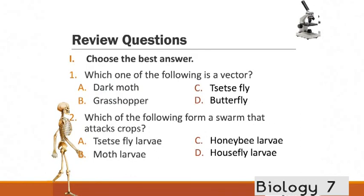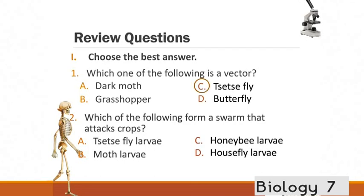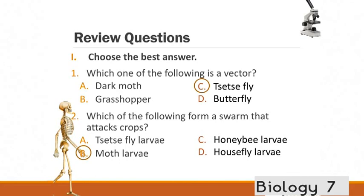Which one of the following is a vector? A. Dark moth. B. Grasshopper. C. Tsetse fly. Or D. Butterfly. Question two. Which of the following form a swarm that attacks crops? Is it A. The tsetse fly larvae. B. Moth larvae. C. Honey bee larvae. Or D. House fly larvae. So the one that's a vector is the tsetse fly. And the swarm that attacks crops is the moth larvae.